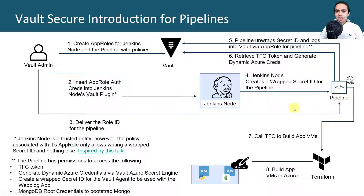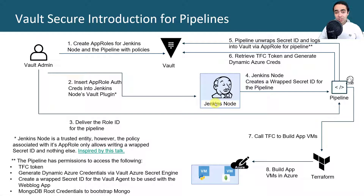You might ask: why not just put the role ID and secret ID directly into the Jenkins Vault plugin? You can do that, but it's a lot less secure — you'd have to figure out how to rotate the secrets for the Jenkins node. This is a more secure approach where we're only allowing the Jenkins node to wrap secret IDs and nothing else. The pipeline gets the wrapped secret ID straight from the node and unwraps it directly through Vault.